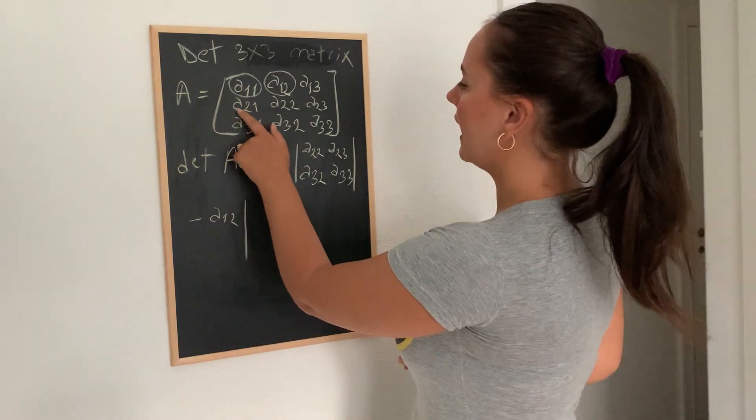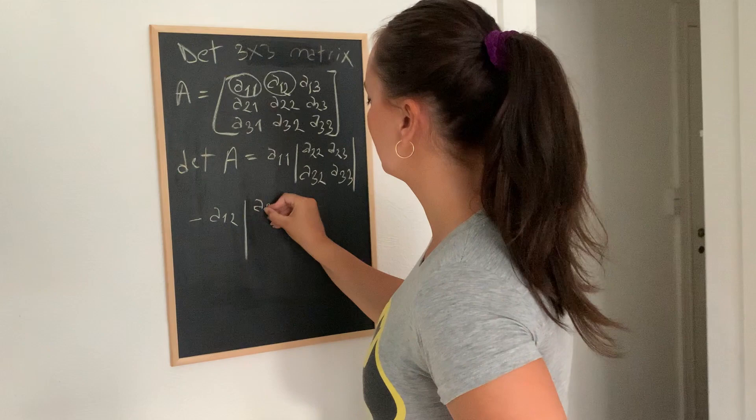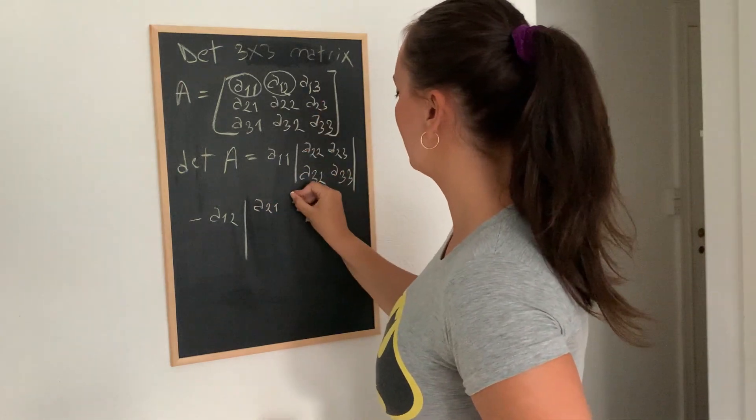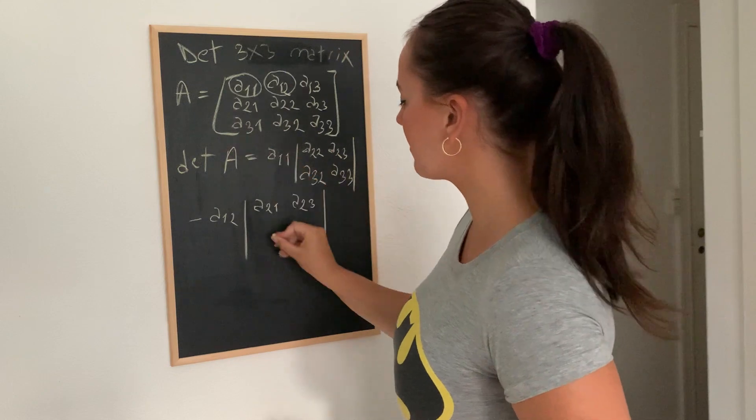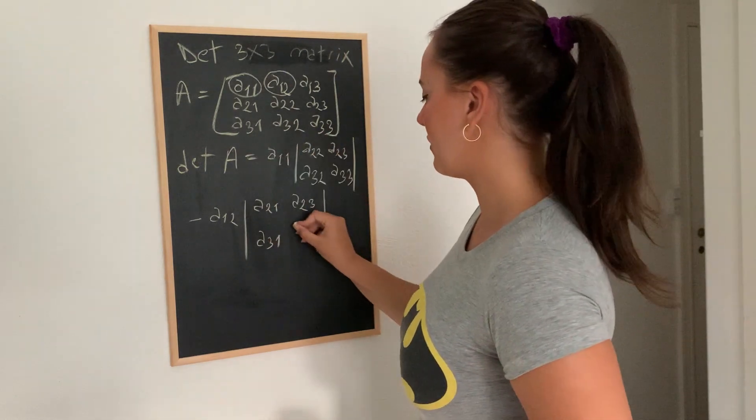And the remaining matrix is A2,1, A2,3, A3,1, A3,3.